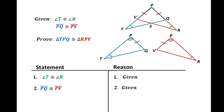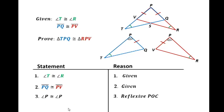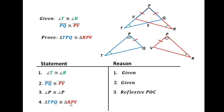It should jump out at you now. We have an angle, angle, and a side. So I need to add into my proof angle P is congruent to angle P, and that would be the reflexive POC. Now I have everything I need. Triangle TPQ is congruent to triangle RPV, and that would be angle angle side.